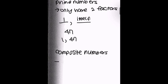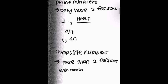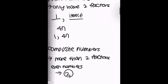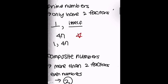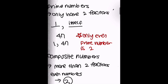Composite numbers have more than two factors. Common composite numbers are even numbers, because all even numbers have two as a factor besides one and itself. But we should remember that for prime numbers, the only even prime number is two, since it has one and two as its factors. For any other even number, it always has one, itself, and two as a factor, so it's always going to be a composite number.